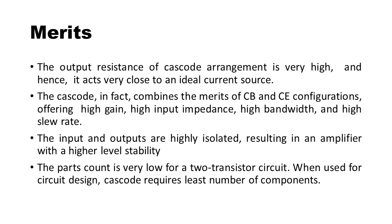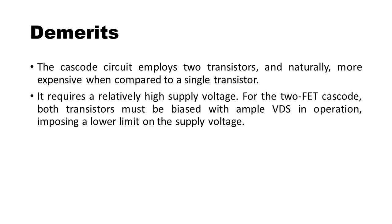The parts count is very low for a two-transistor circuit; when used for circuit design, the cascode requires the least number of components. The demerits of the cascode amplifier are given below. The cascode circuit employs two transistors and is naturally more expensive when compared to a single transistor. It requires a relatively high supply voltage; for the two-fed cascode, both transistors must be biased with ample VDS in operation, imposing a lower limit on the supply voltage.